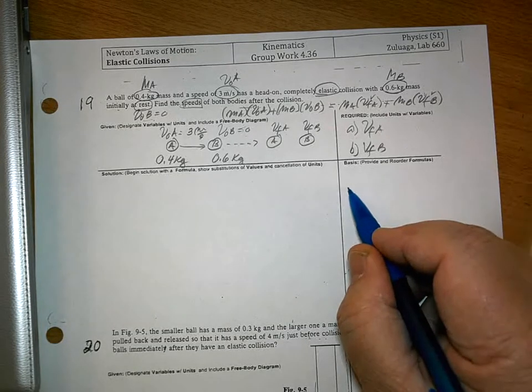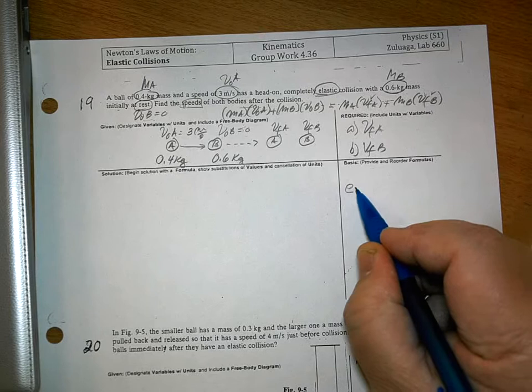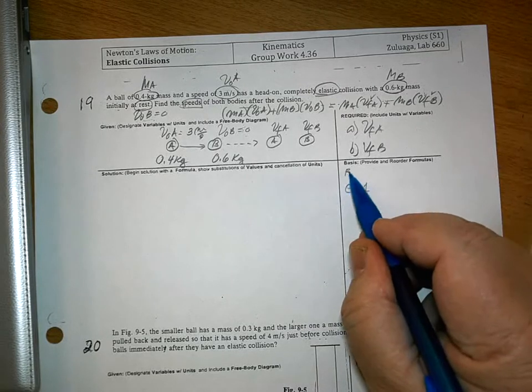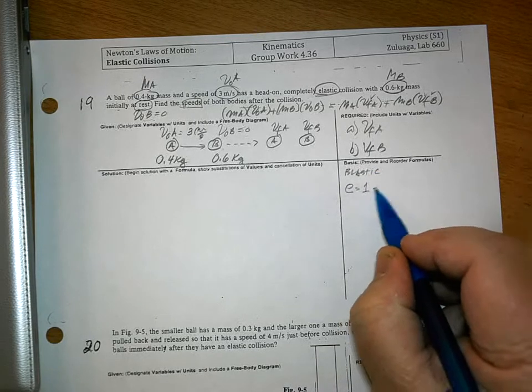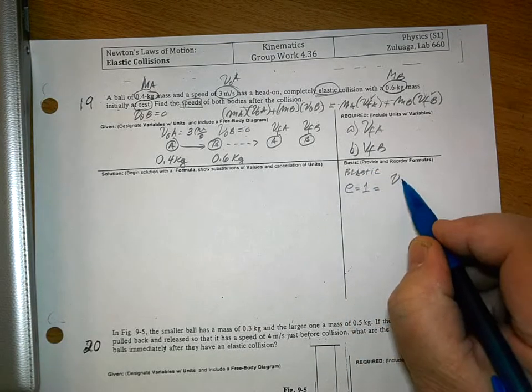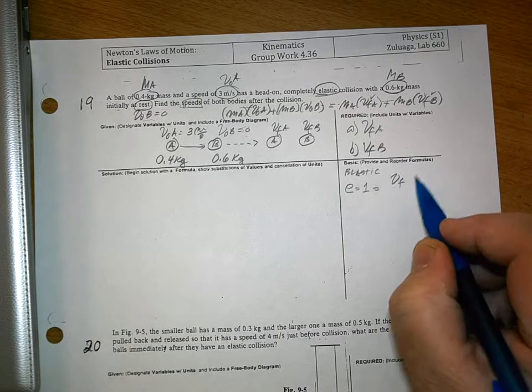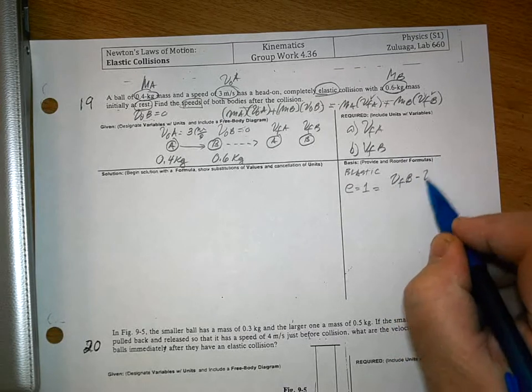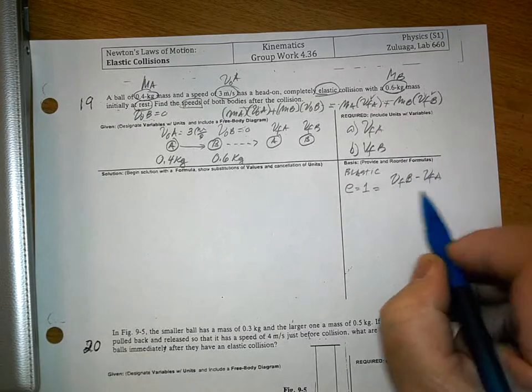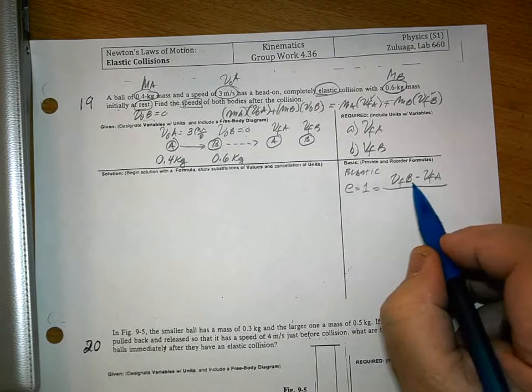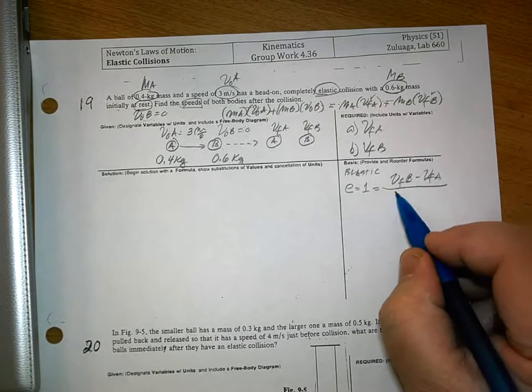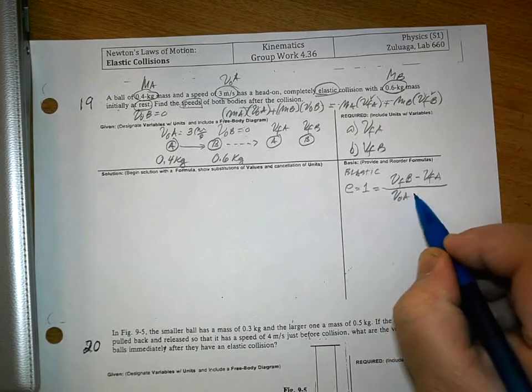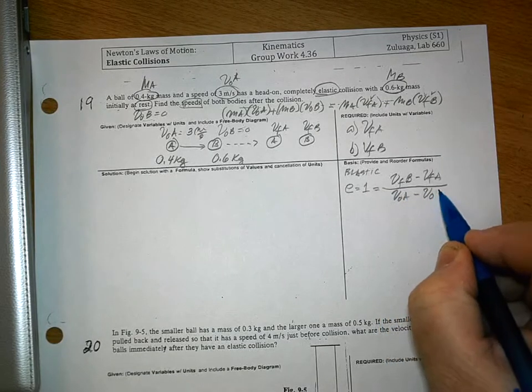Your second equation is going to be the coefficient of restitution for an elastic collision. E is equal to 1, and this is equal to the difference in the final VFB minus VFA. Notice, B will be faster than A. And then, VOA minus VOB.